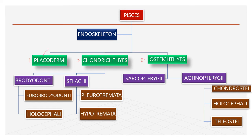The endoskeleton of Placodermi is made up of bone, so it is bony. Whereas in Chondrichthyes, the endoskeleton is made up of cartilage, and in Osteichthyes the endoskeleton is made up of bone. Chondrichthyes and Osteichthyes are the two classes that include the extant fishes — also called living and recent fishes.